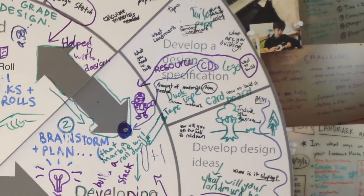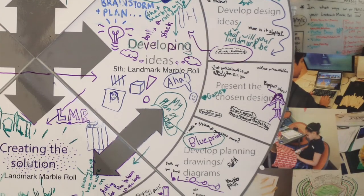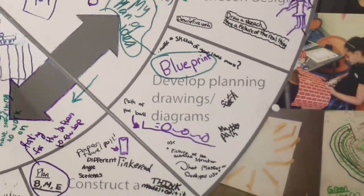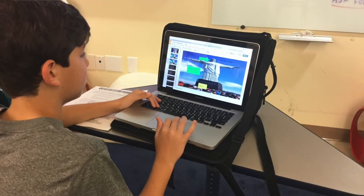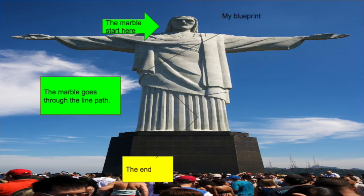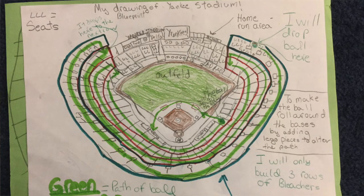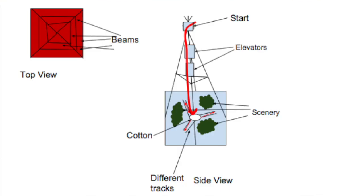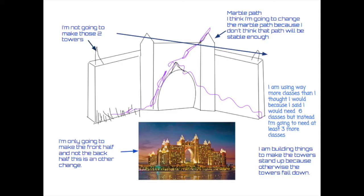So then I changed my idea. In developing ideas, I made a blueprint, and that connects to that one specific area: develop planning and drawings in the design cycle. The connection was with the design cycle and developing planning and drawing diagrams because I made my blueprint and my marble plans to see what it would look like.